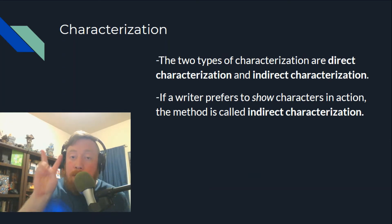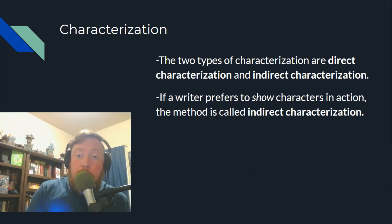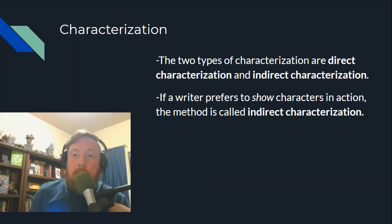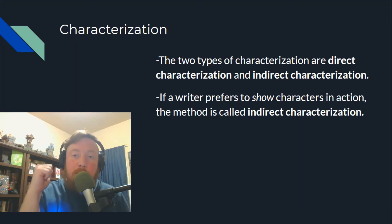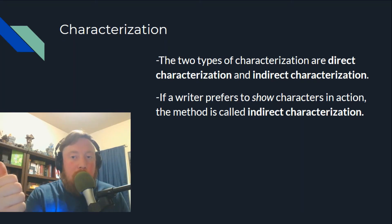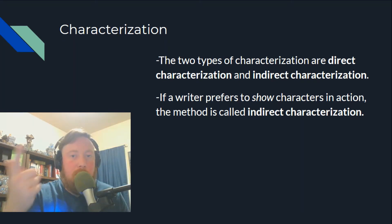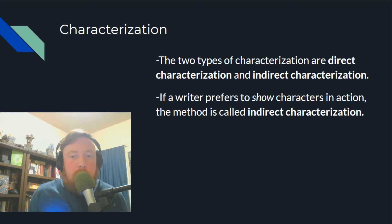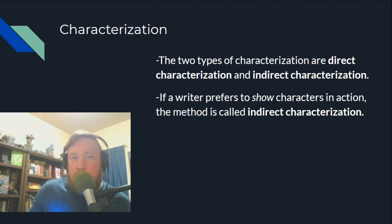There are two types of characterization: direct characterization and indirect characterization. If a writer prefers to show characters in action, that method is called indirect characterization. One of the classic rules of writing is: don't tell your audience — show them.